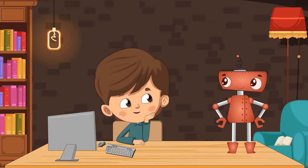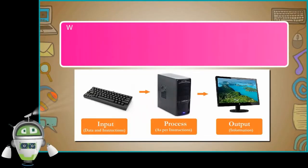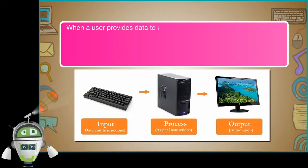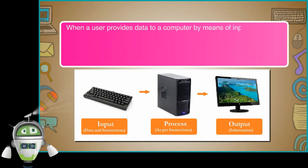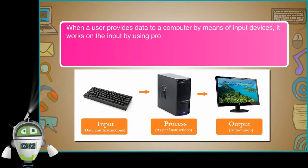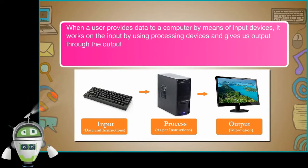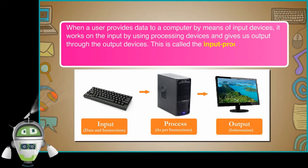Please tell me about computer memory and storage devices. Sure, Romy. Let us learn about this in the chapter. When a user provides data to a computer by means of input devices, it works on the input by using processing devices and gives us output through the output devices. This is called the Input-Process-Output Cycle, or IPO cycle.